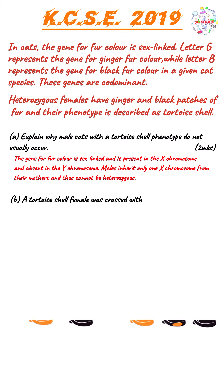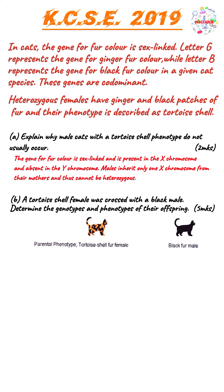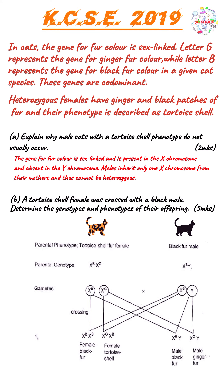Moving on to part B: a tortoiseshell female was crossed with a black male. We need to determine the genotypes and phenotypes of their offspring. The parental genotypes are shown, followed by the gametes, and lastly the F1 genotypes and phenotypes of the offspring.